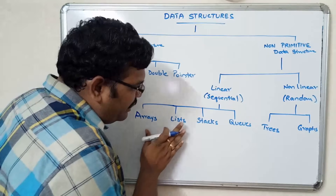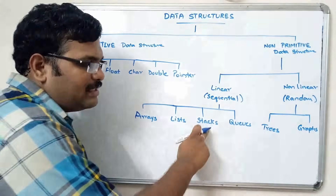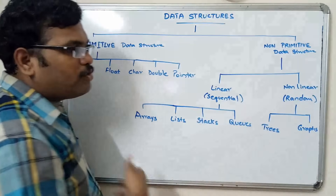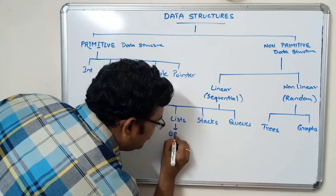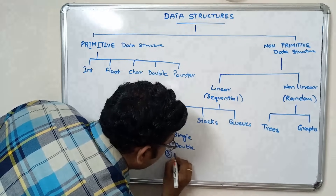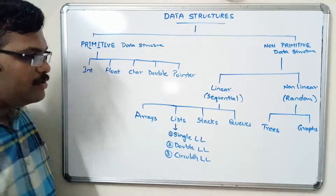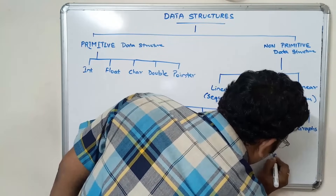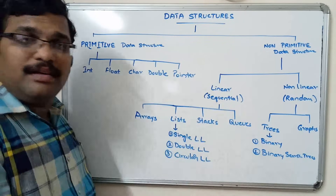So now we have to see about lists, stacks, queues, trees, and graphs — how data is arranged in each. Under lists there are a number of categories: single linked list, double linked list, circular linked list, and elements linked list. Under trees we are going to discuss binary trees and binary search trees, and there are a number of other trees we will discuss in those sessions.